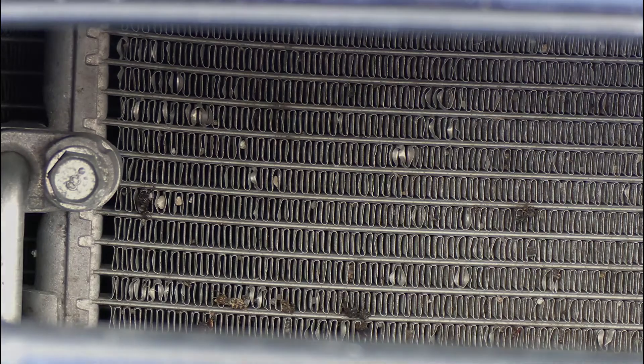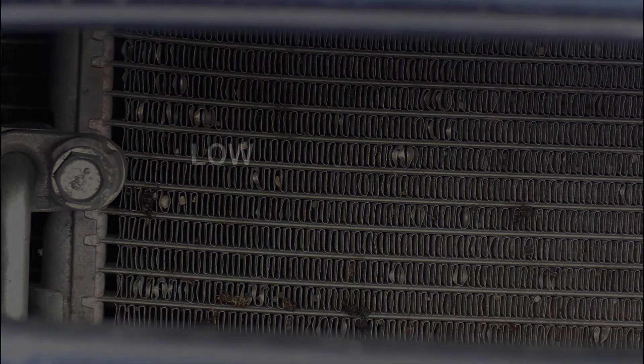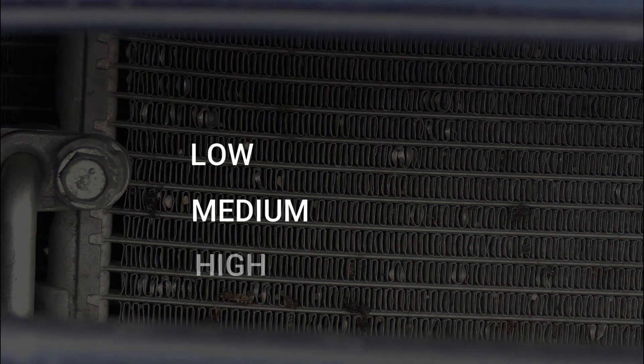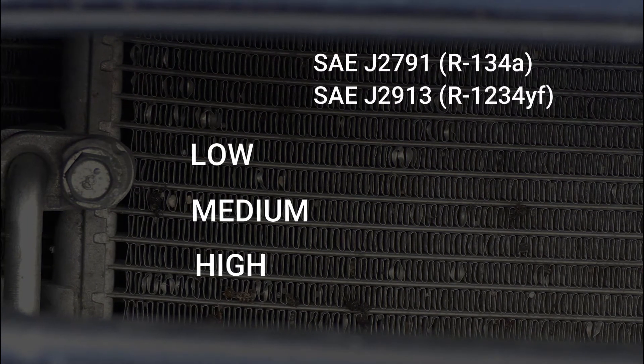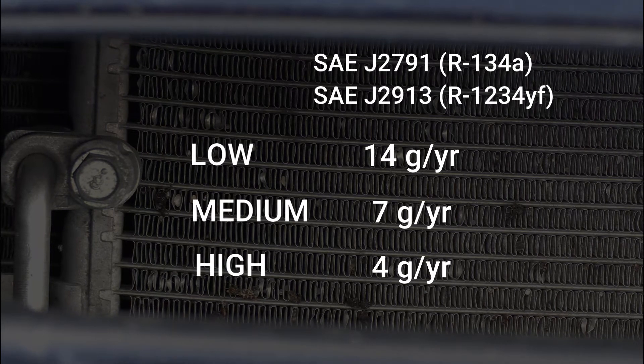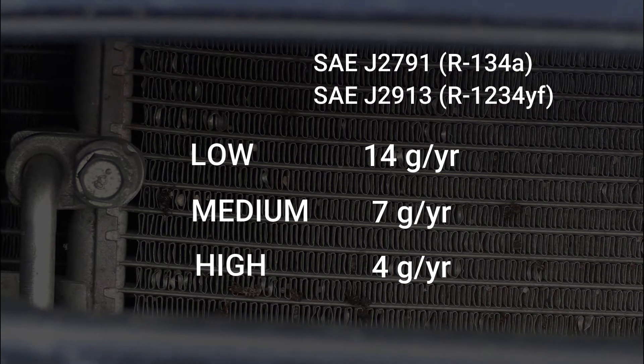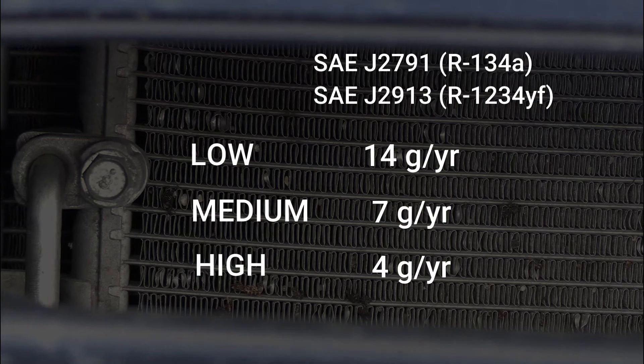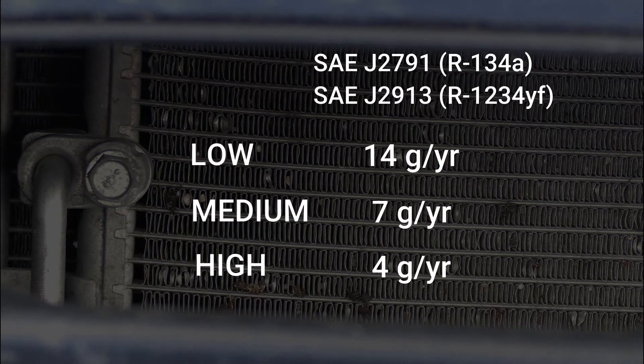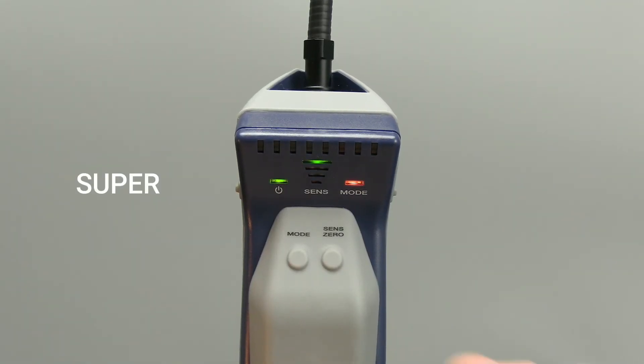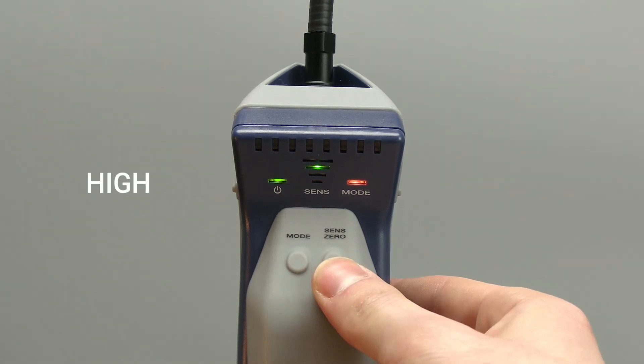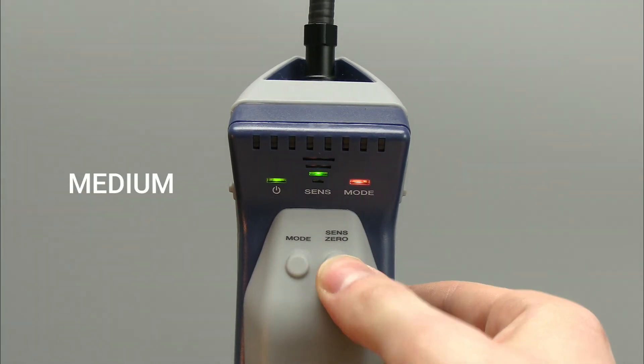AST 200 IR has four sensitivity levels. Low, medium, and high can be used to find leaks according to SAE J2791 and J2913 guidelines. Super sensitivity can be used to find even the smallest leaks. Press the sense zero button to toggle between sensitivity settings. The sense indicators show the current sensitivity setting.